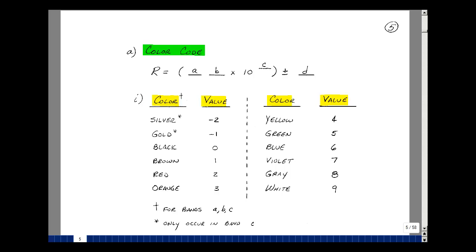If you orient the resistor so the colored bands are starting at the left-hand side, then we have four colors. We're going to call them A, B, C, and D.